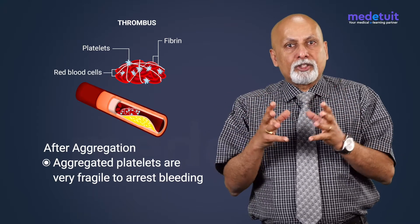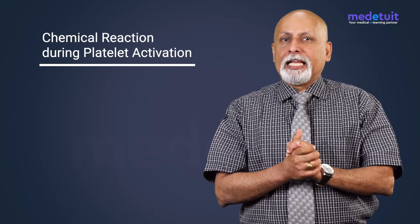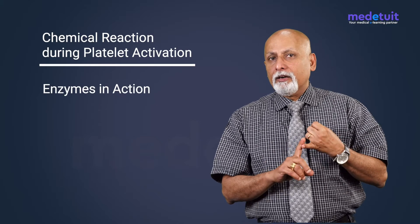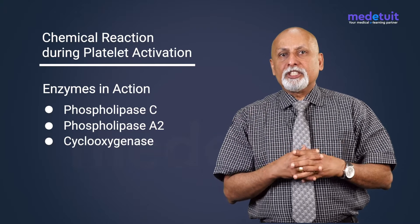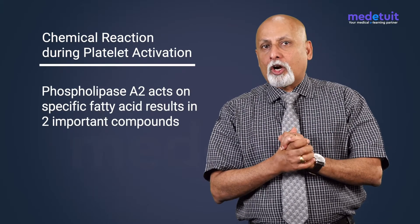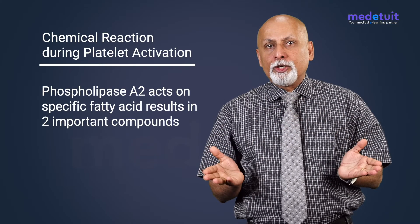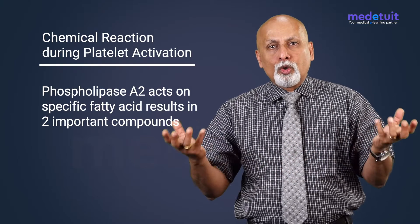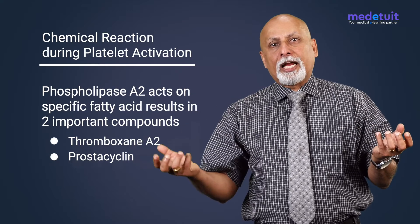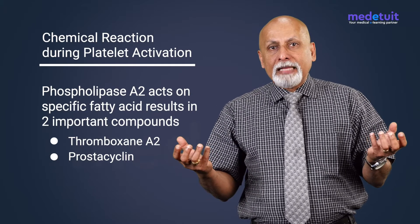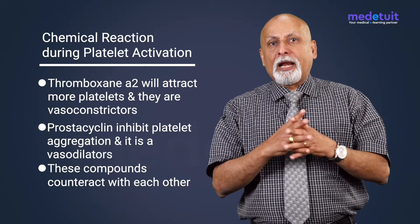There are important chemical reactions taking place during platelet activation: phospholipase C, phospholipase A2, and the enzyme cyclooxygenase. Phospholipase A2 acts on specific fatty acids on the membrane, cleaving them into intermediates, and finally producing two important compounds: thromboxane A2 on one side and prostacycline on the other side. These have a very contrasting mode of action.